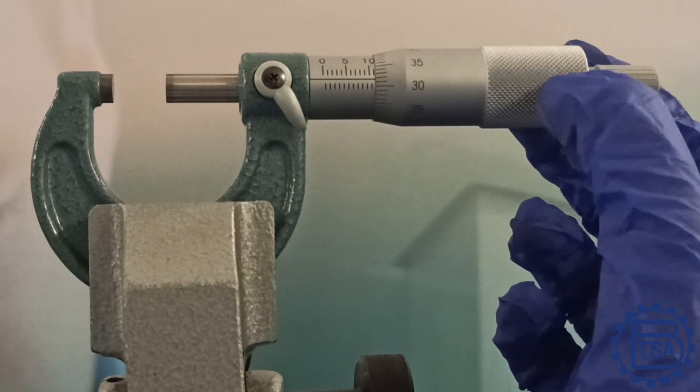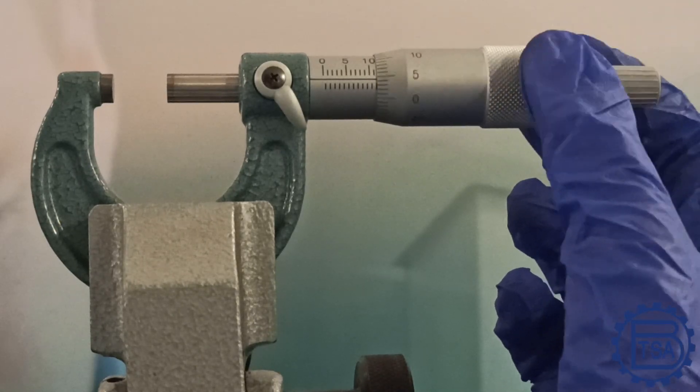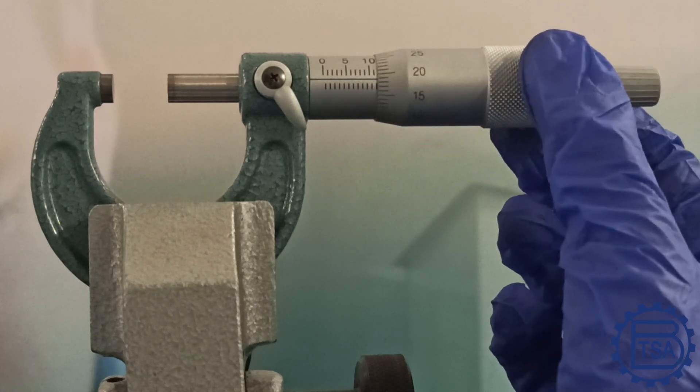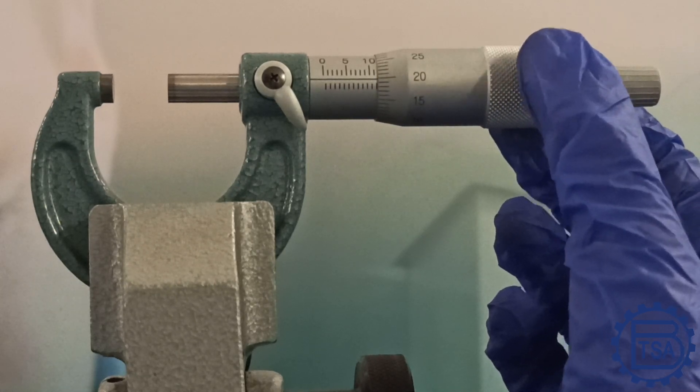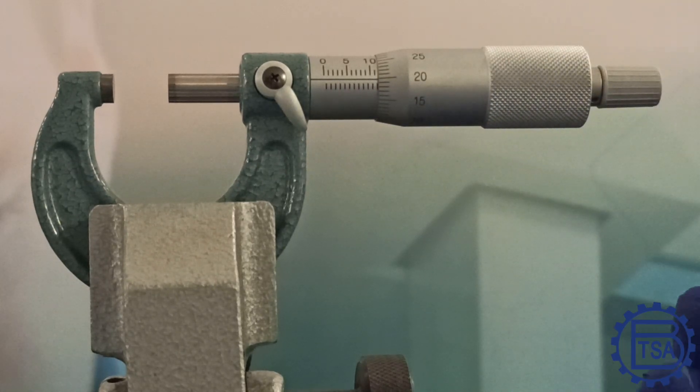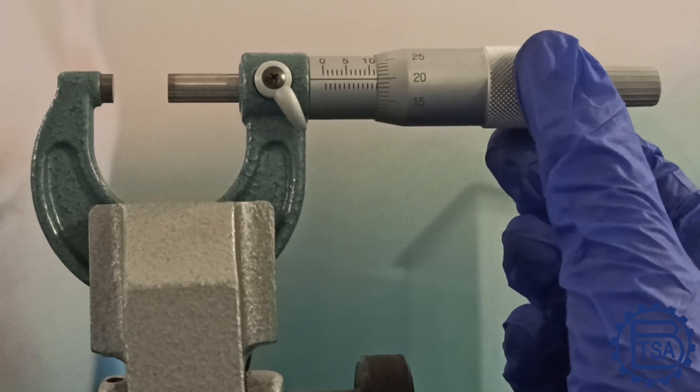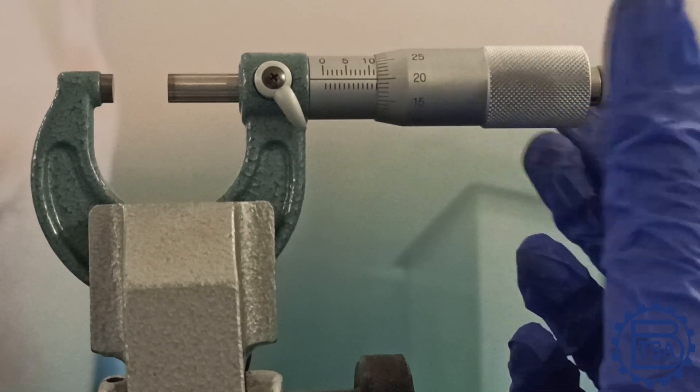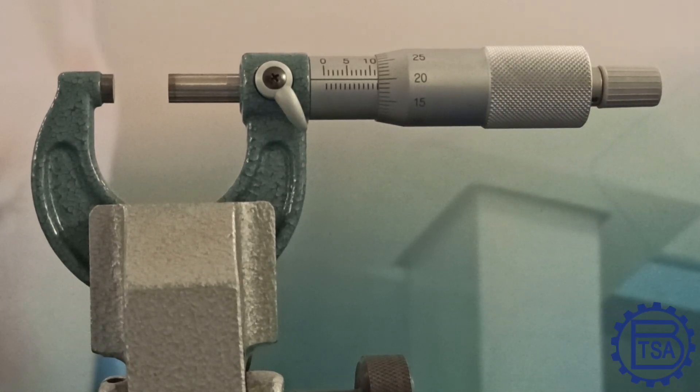However, if the main scale reading crosses 0.5 mm, or in this example it crosses 11.5 mm, then the reading on the thimble has to be noted by adding 0.5 mm. The reading now is 11.70 mm.